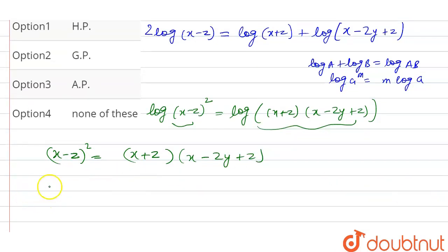So now x minus z whole square is equal to x plus z into x minus 2y plus z. So now we will open this square that is x square plus z square minus 2xz is equal to x square minus 2xy plus xz plus xz minus 2zy plus z square.